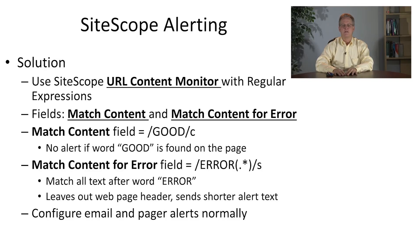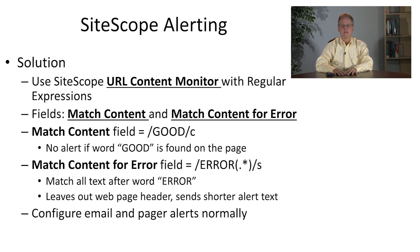The solution to this use case is to use the SiteScope URL content monitor. We're going to use two fields on that monitor: "match content" and "match content for error." As you see on the slide, the first field is configured to look for the word "good" — which in the use case indicates no problem with the infrastructure — using a regular expression containing the word "good" with the modifier C after it, indicating that an alert will be sent only if the word "good" is not found. In the second field, "match content for error," we put a regular expression so that the content of the URL is sent as the alert, specifically the content after the word "error."